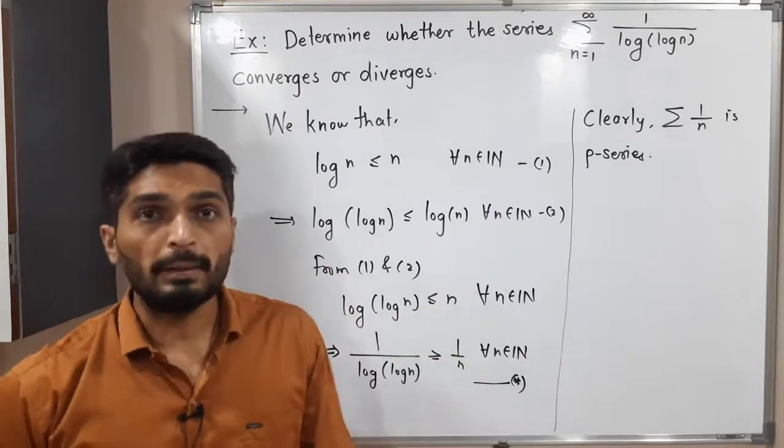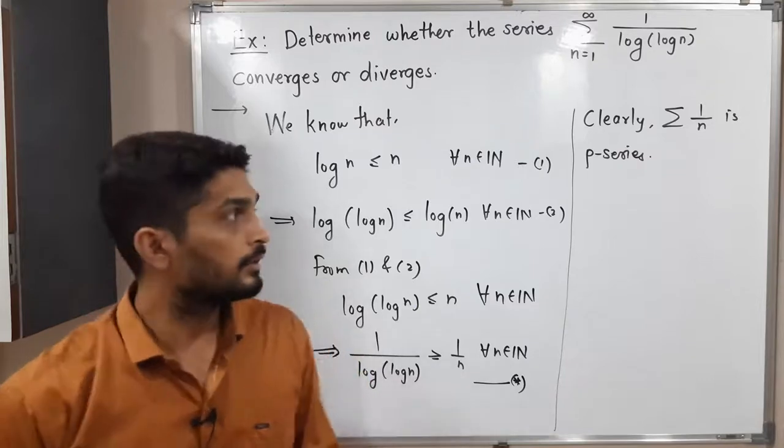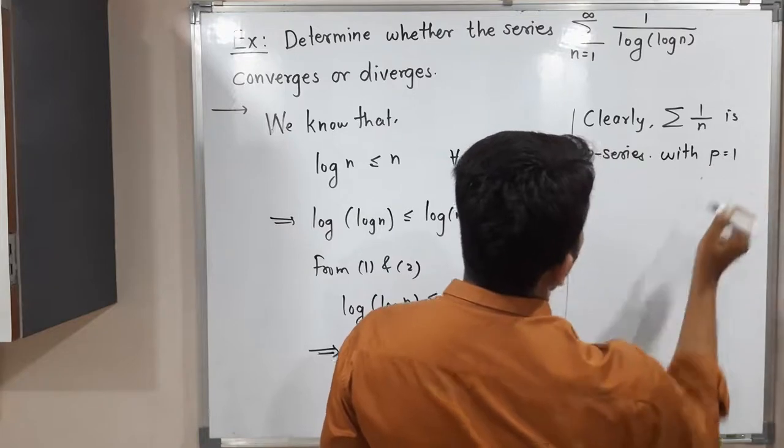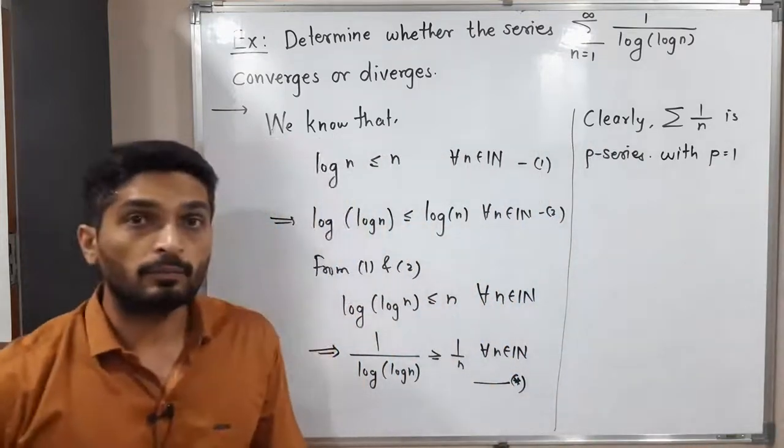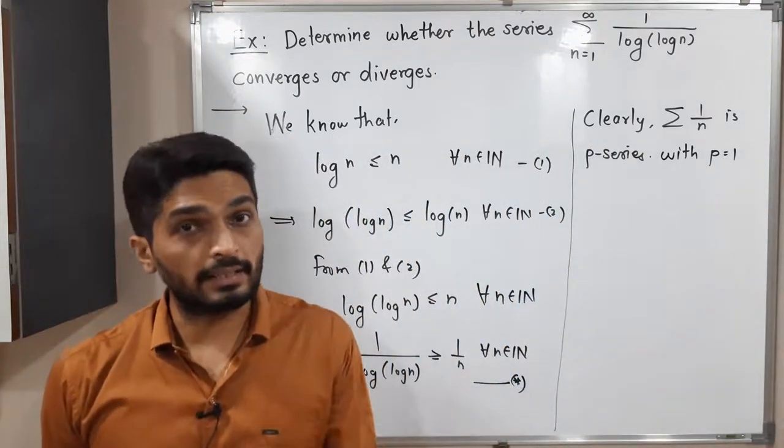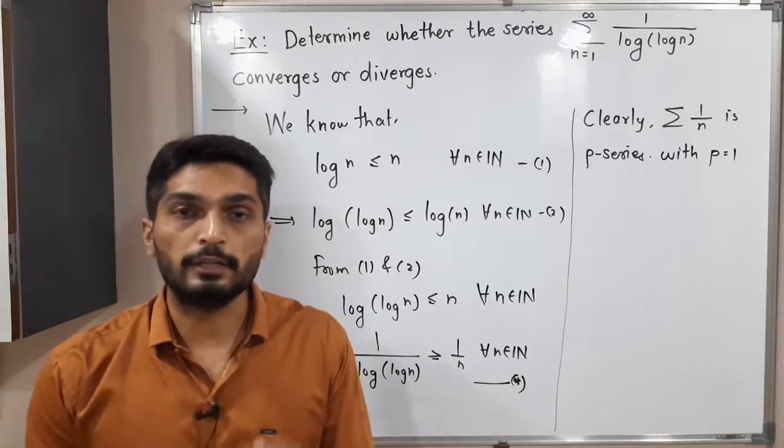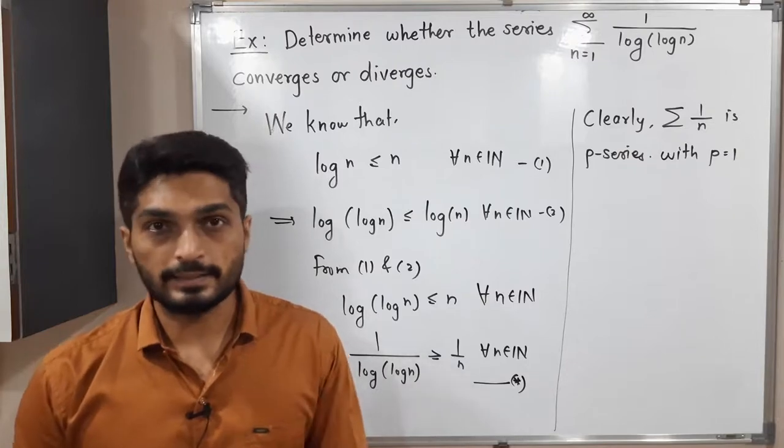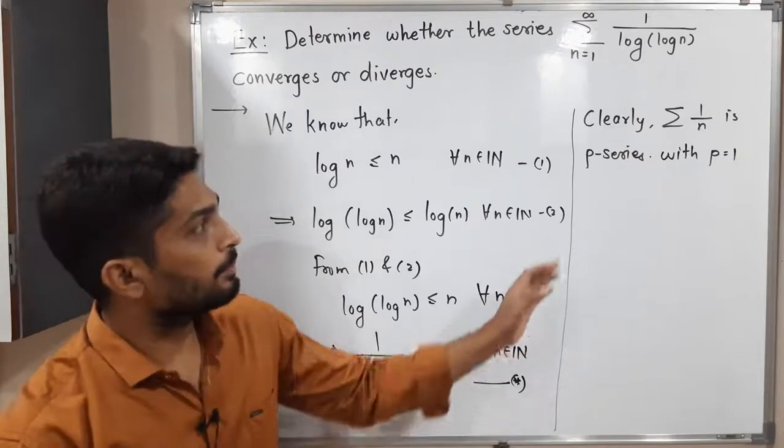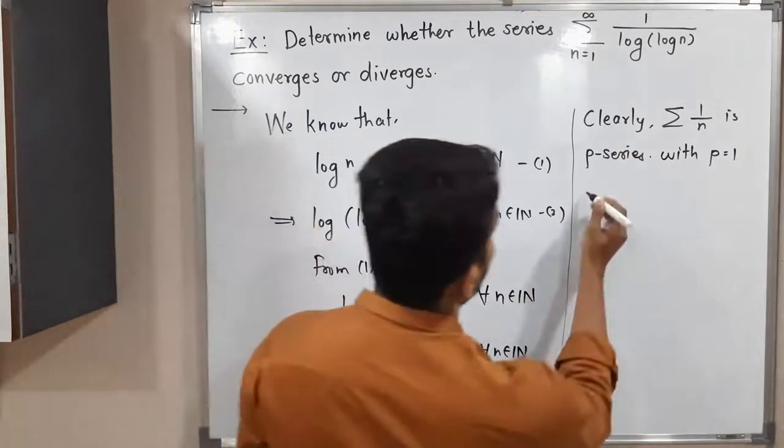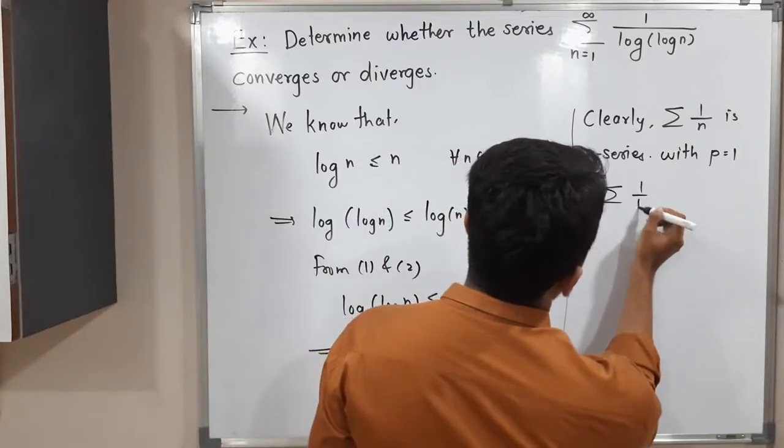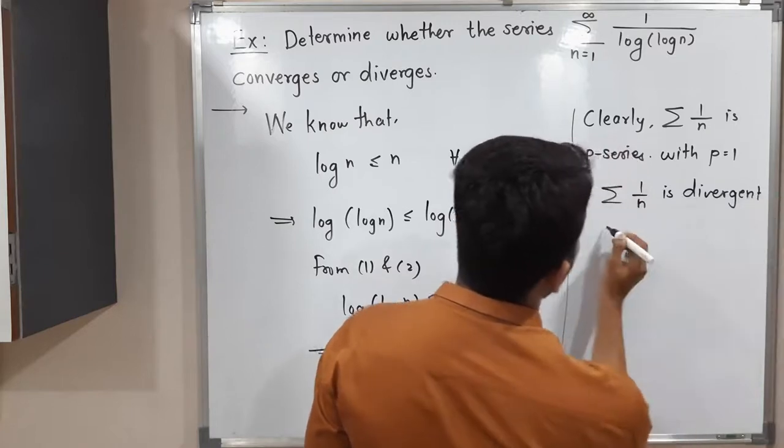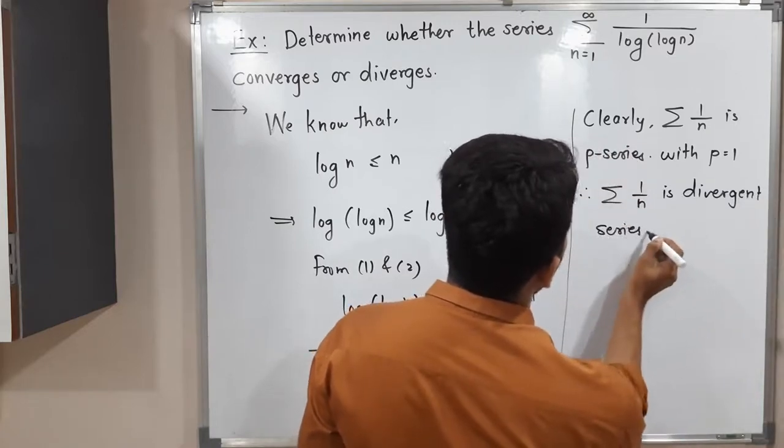We know that if we have a p-series, if p greater than 1 then it is convergent, and if p less than or equal to 1 then it is divergent, provided p is greater than 0. Therefore, with p equal to 1, summation 1 upon n is a divergent series.